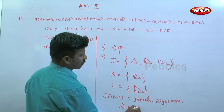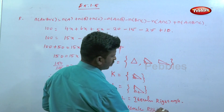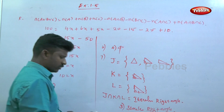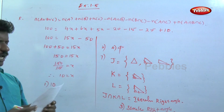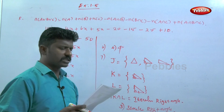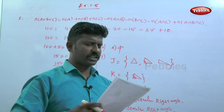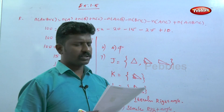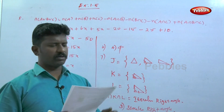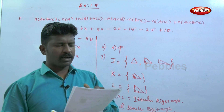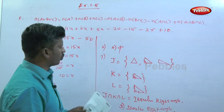Question eight: for two non-empty sets A and B, (A - B) ∪ (A∩B) can be represented using a Venn diagram. Option one (option A) is the correct answer.